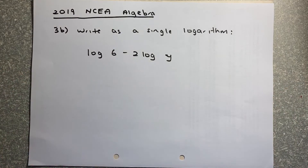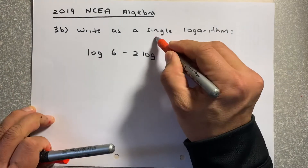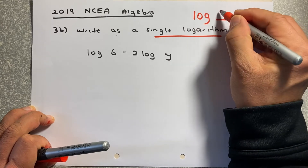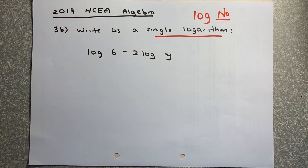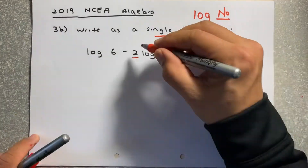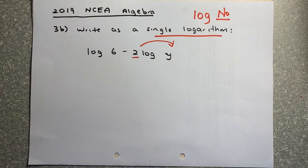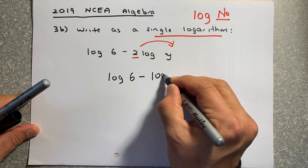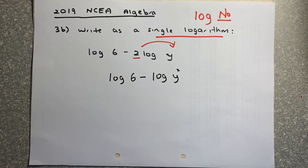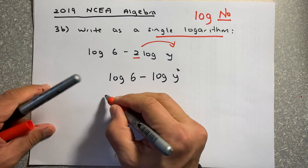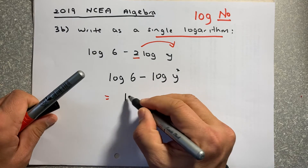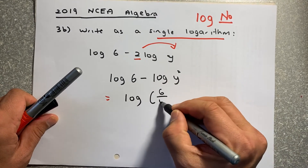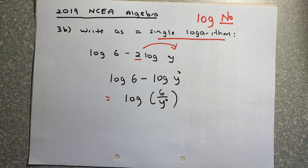Looking at the NCA 2019 exam — another achieved question — they want you to write as a single logarithm. First, apply rule number 3: the 2 can go up and become a power, giving log 6 minus log y squared. Because that is a minus, it becomes log bracket 6 divided by y squared. That is a simple achieved answer.